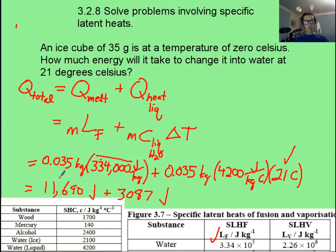So notice it takes way more heat to melt it than it does to raise the temperature of the water. And that's often the case. Phase changes usually take more energy than just changing the temperature of something. And that's going to give us 14,777 joules. And let's round that to two sig figs and end up with about 15,000 joules as our total answer.